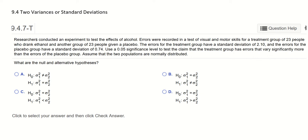Let's look at this homework problem as an example. Researchers conducted an experiment to test the effect of alcohol. Errors were recorded in a test of visual and motor skills for a treatment group of 23 people who drank ethanol.